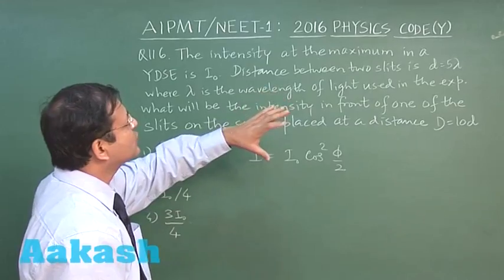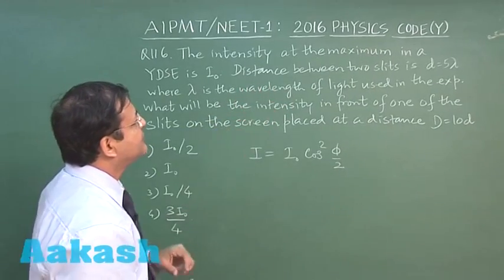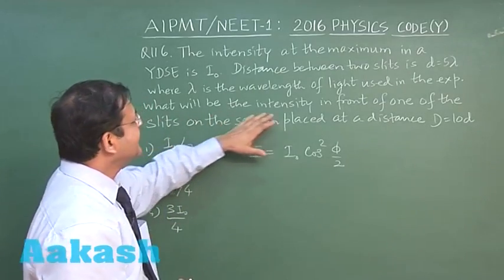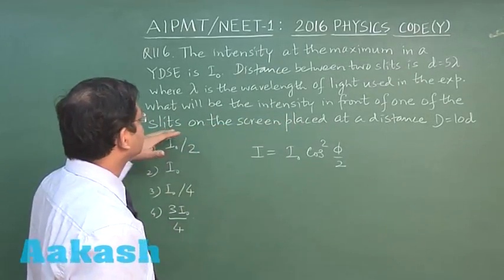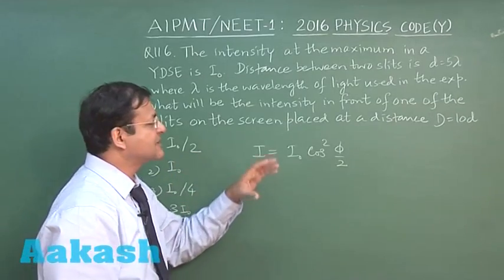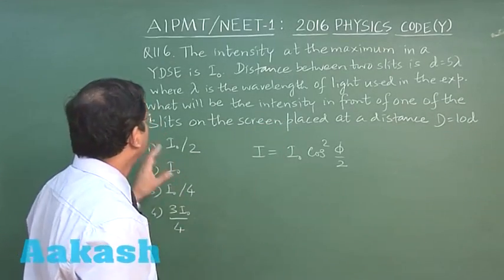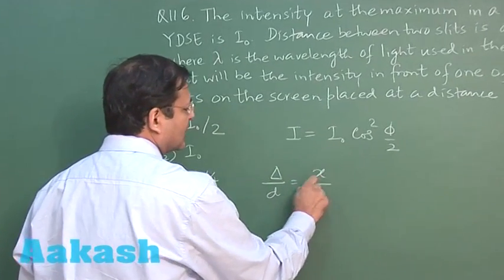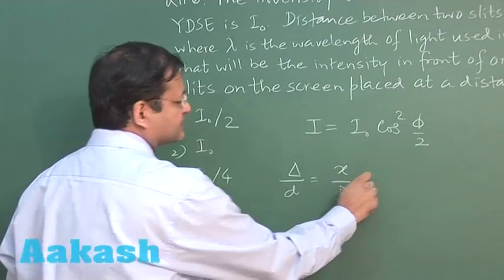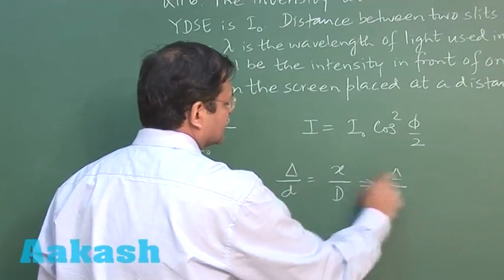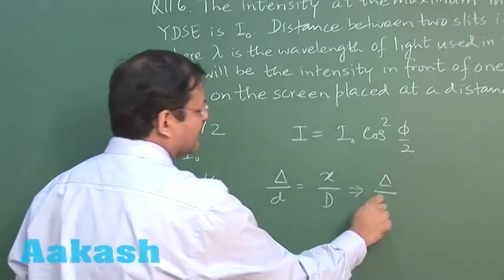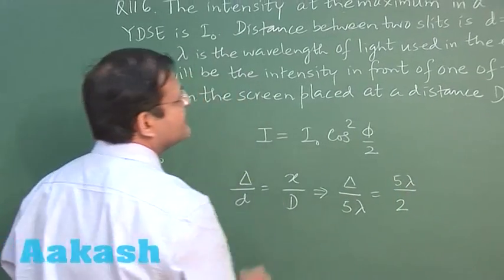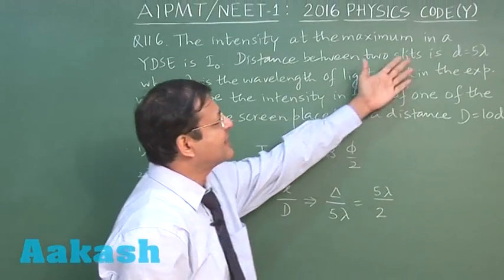Now it says the distance between the two slits is 5 lambda, where lambda is the wavelength of light used in the experiment. What will be the intensity in front of one of the slits? In front of one of the slits means x is equal to d by 2. So you have to use this expression to calculate path difference. If you remember this is a short formula you had. Path difference delta upon this small d, small d is 5 lambda given to you. X value is given to be 5 lambda by 2 and this d value is given at 10 d and d is 5 lambda. So d is equal to 50 lambda. So here you can write 50 lambda.